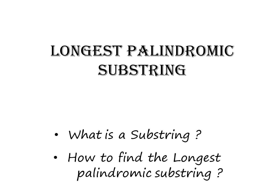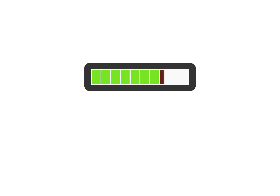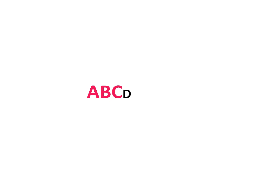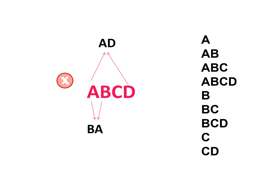Now let's see about substrings. Substrings are contiguous sequences of characters within a string. For the string ABCDE, A is one substring, AB is one, ABC is also one, and ABCDE itself is also a substring. But AD and sequences that are not in order or not contiguous cannot be a substring. All possible substrings for ABCDE are these.